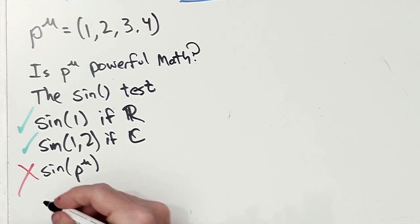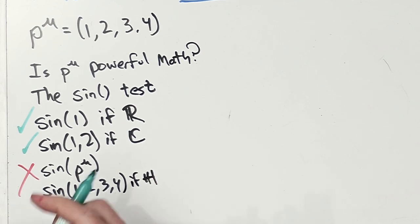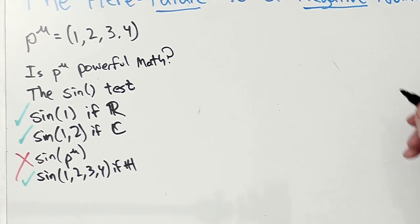Whereas if it's (1, 2, 3, 4) as a quaternion, then it absolutely does make sense.